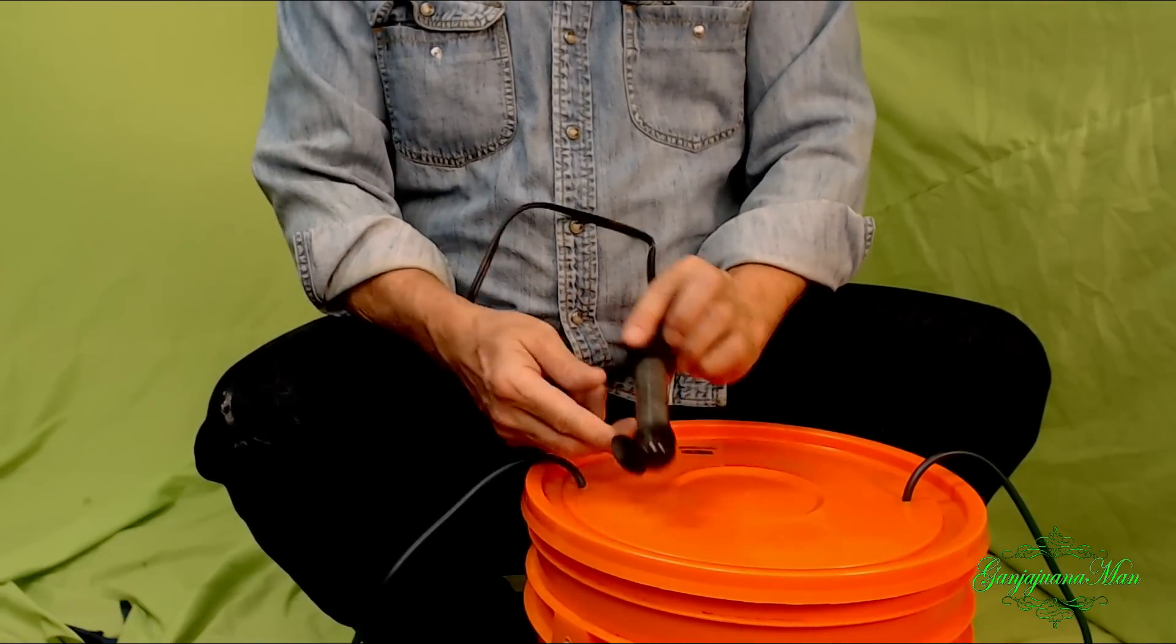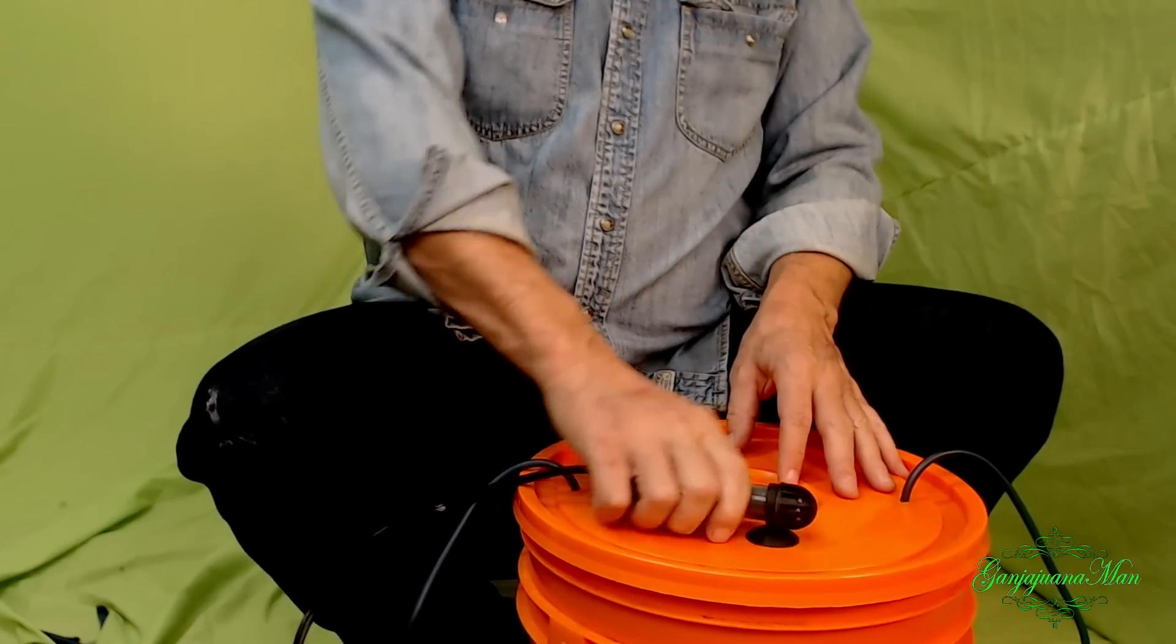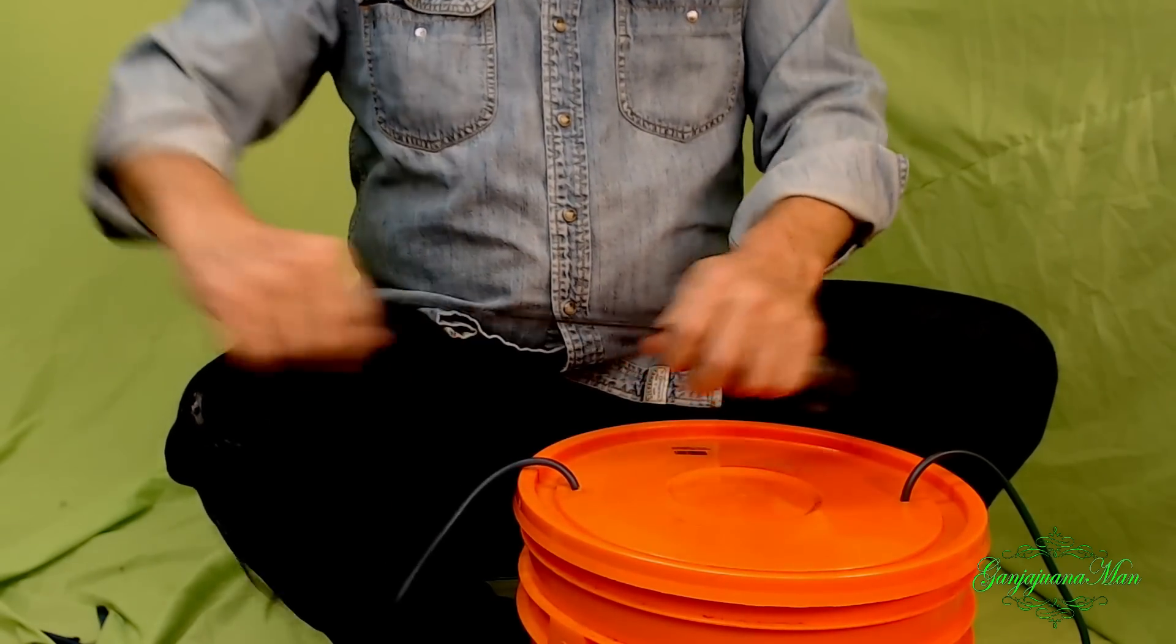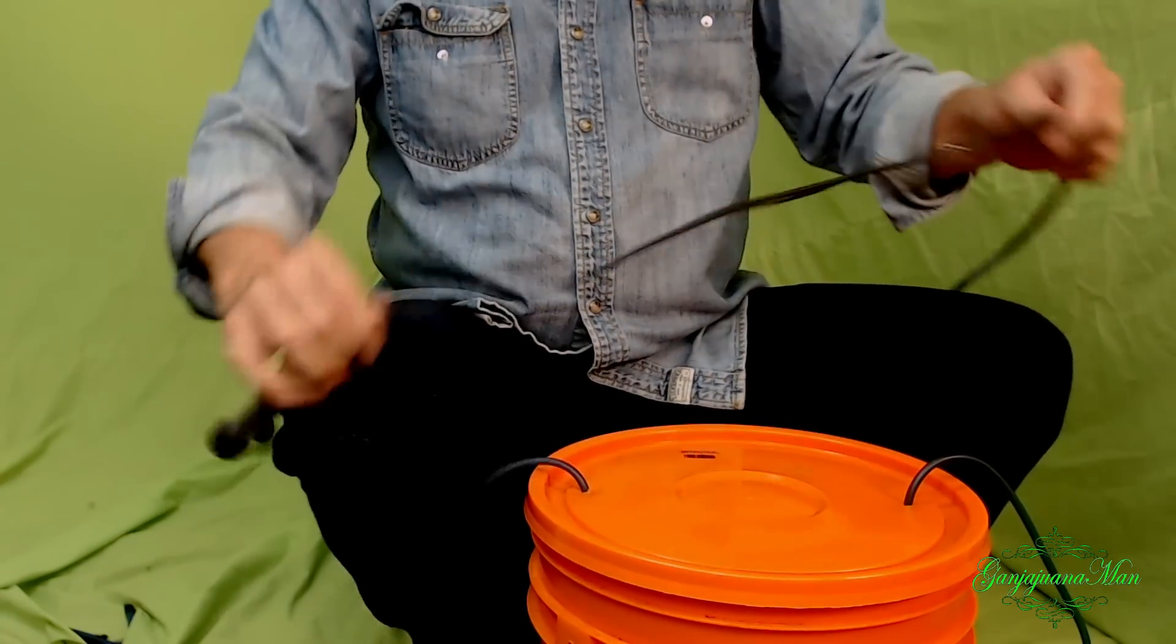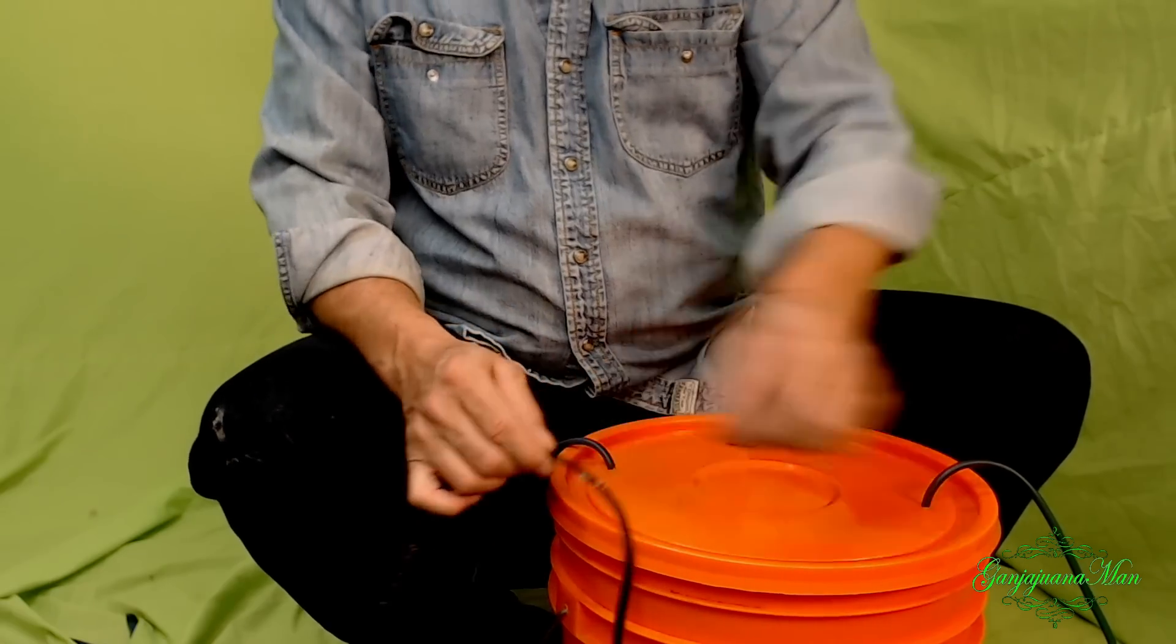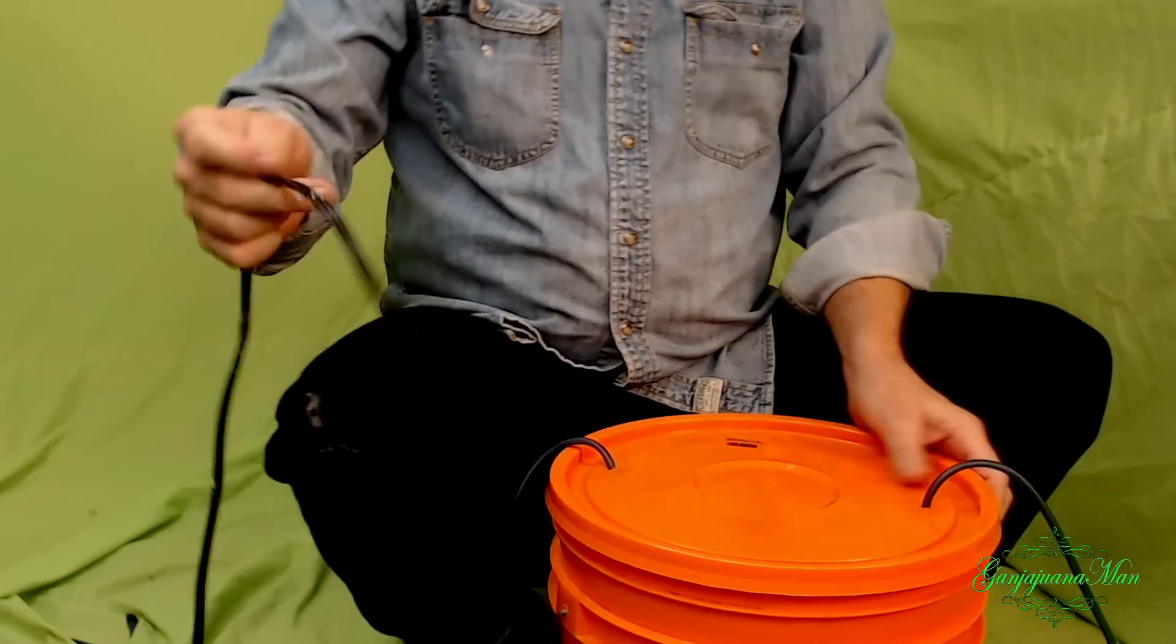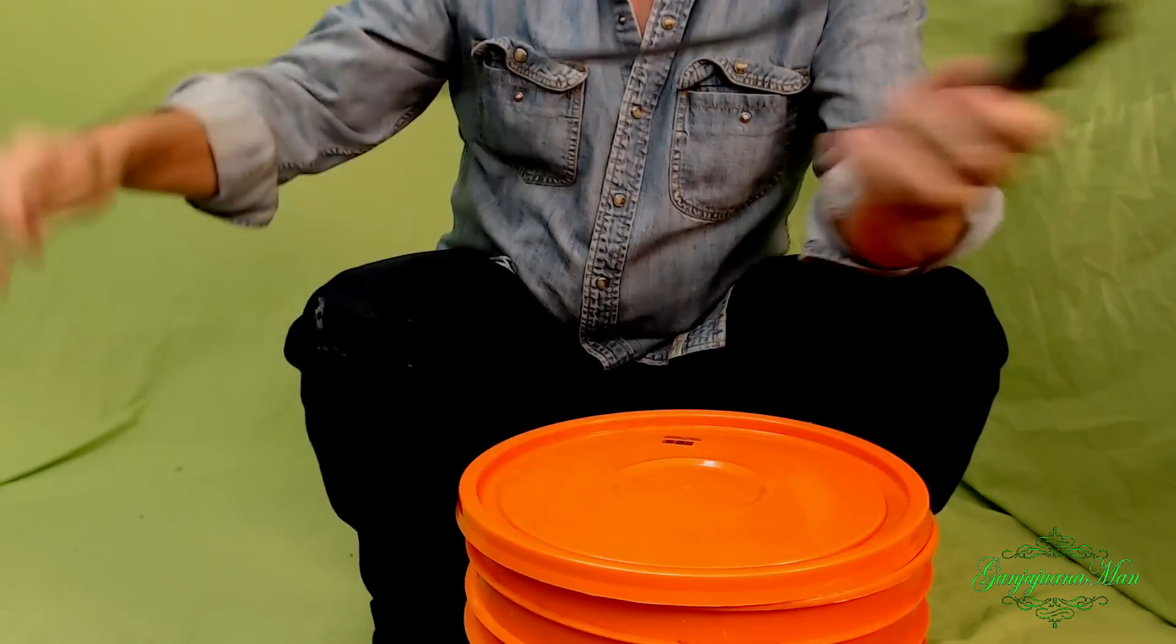This heater has a suction cup on the bottom, so I'll be putting it on the bottom of the bucket, and the inside, of course. Cut the cord, well, I'll probably do it closer to this end. I'll make a very small hole to feed that through, reconnect my cord, and then my heater will be good. That's what I'm going to use.